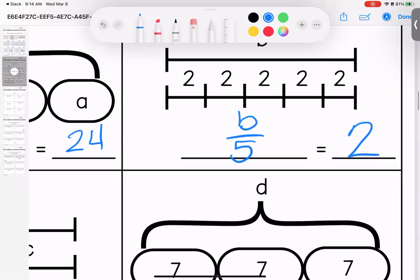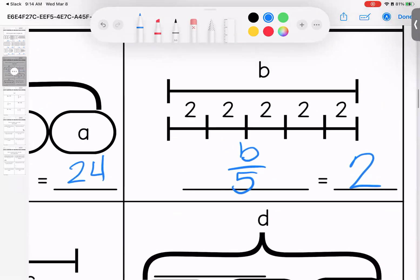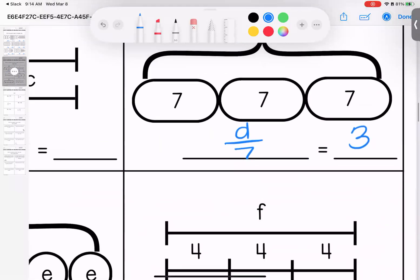Now I can flip-flop these. So up here I did b divided by 5 is 2. Here I did d divided by 7 is 3. I can flip-flop it though. I can say also that d divided by 3 equals 7. They would both be correct.